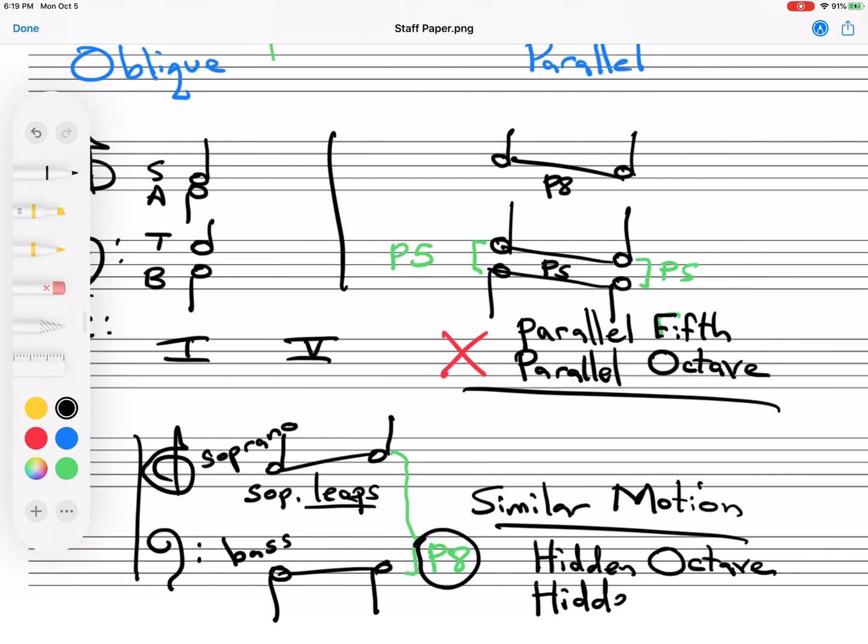Kind of the same situation. But let's suppose the soprano was on, I don't know, D, and it leaped up to a G. Then you would be leaping up to a perfect fifth. That's also not allowed. So, this is similar motion. I'm sorry. Hidden octave or hidden fifth. So there are three conditions for this. One, it's a soprano and the bass. Two, the soprano leaps. And three, it ends in a perfect octave or a perfect fifth between those two voices.